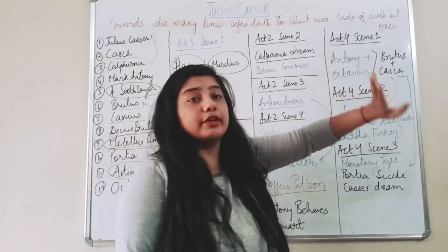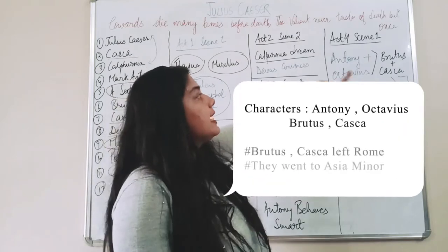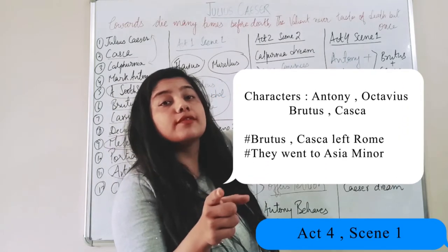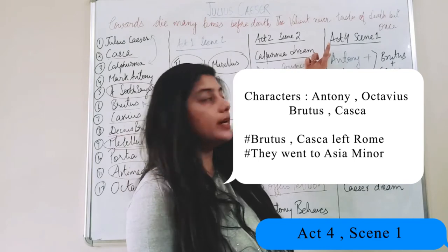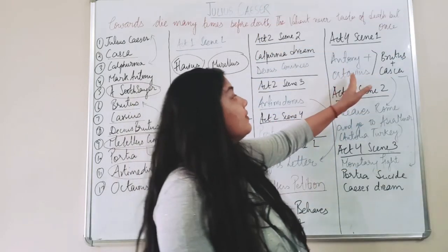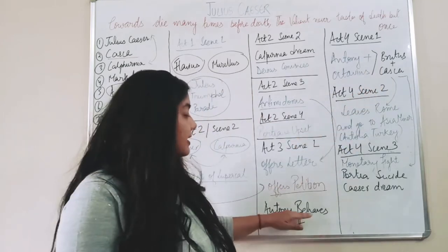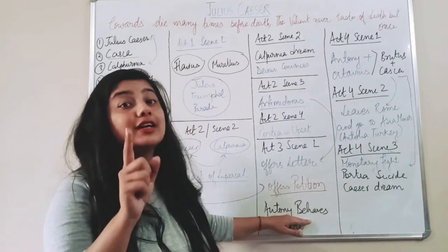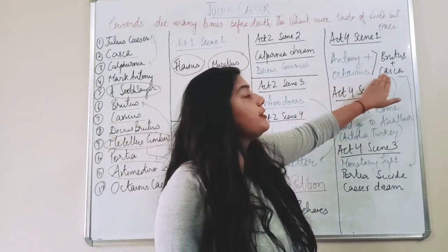Act 4 Scene 1. Now there are four people left: Antony and Octavius. Octavius was the nephew of Caesar. Both of them are into one team. Brutus and Cassius is the other team. Now they will have fight because now Antony has clearly told that he is in support of Caesar. So now there is a fight between these two.